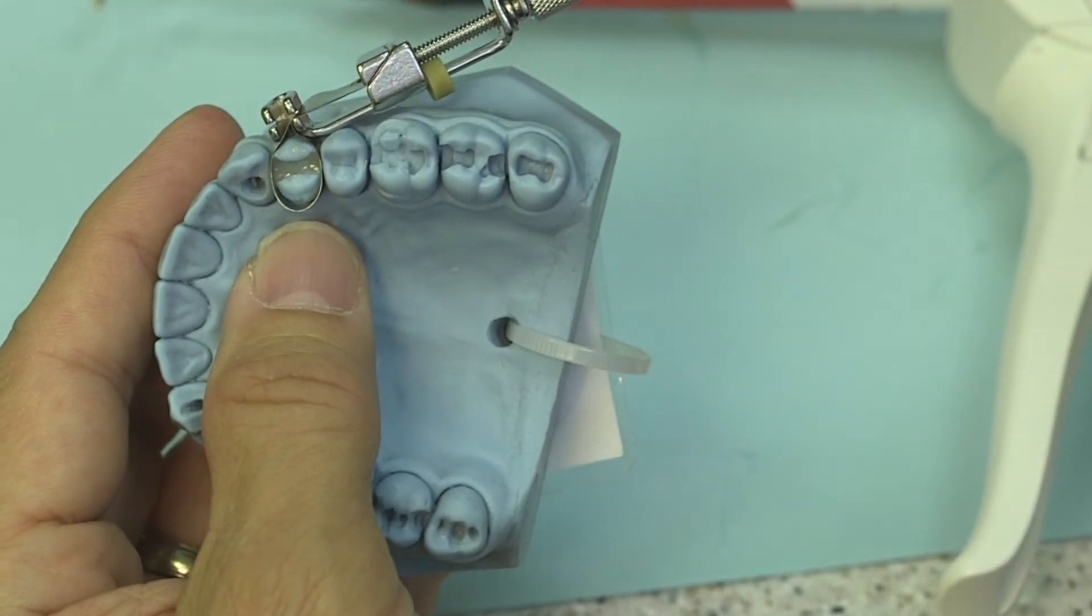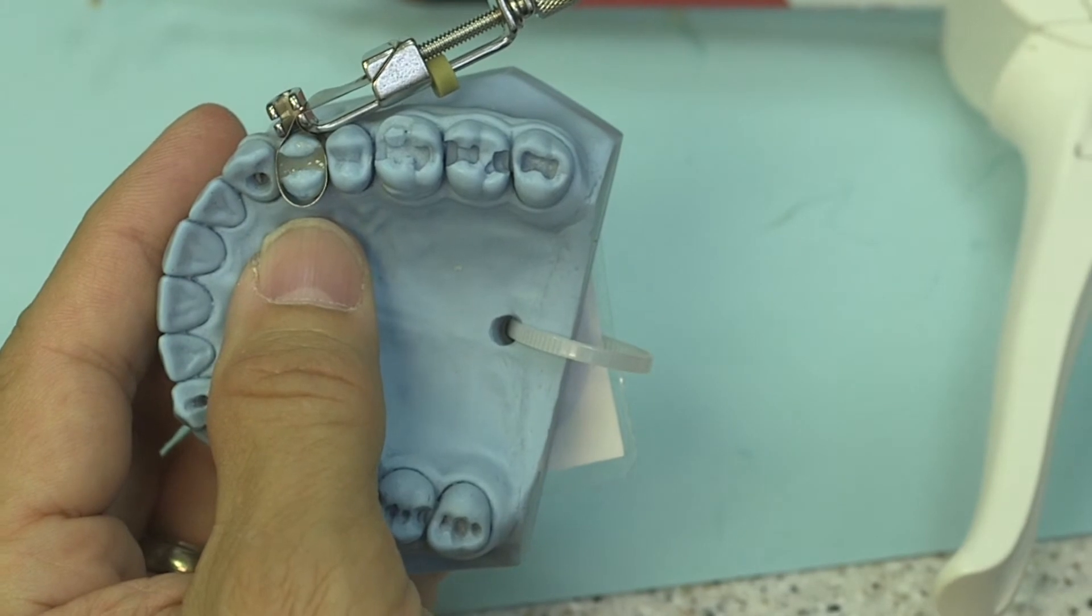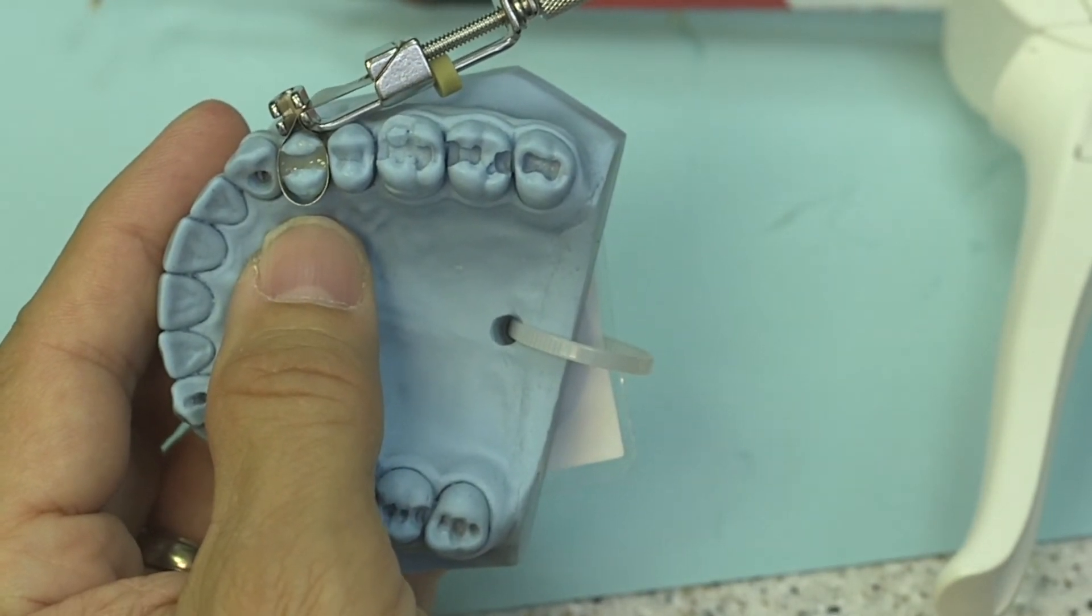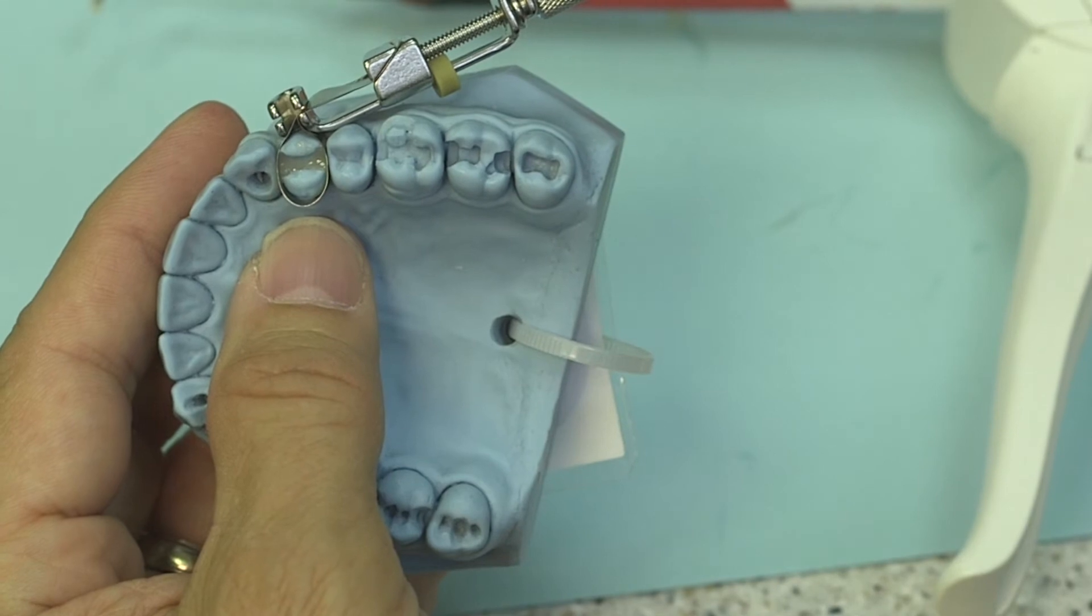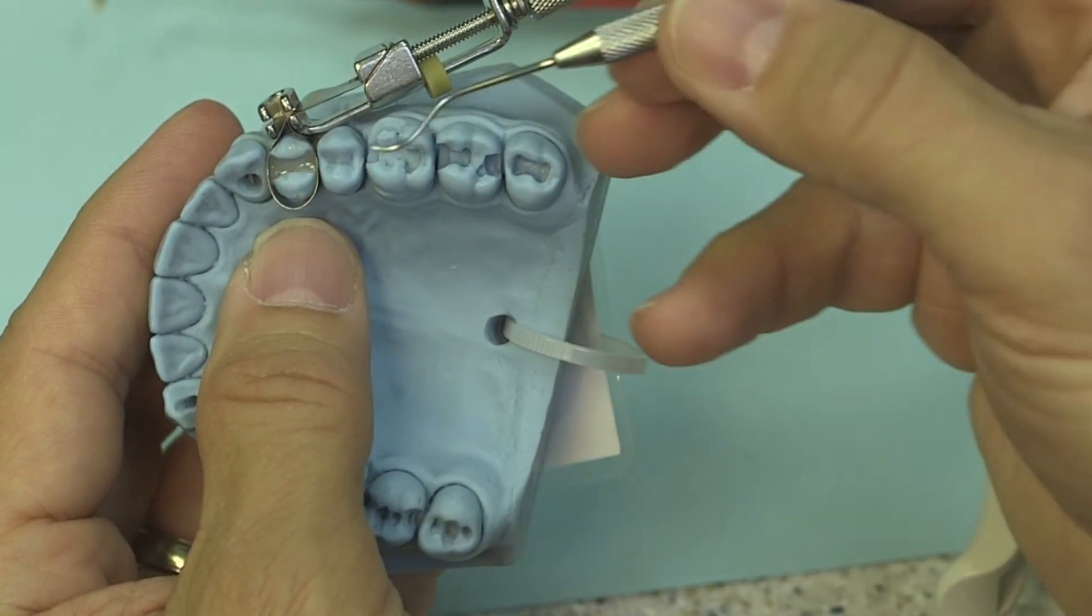As I like to call it sometimes, you're creating a tootsie roll pop: hard on the outside, soft on the inside, and you're not going to really have a full thorough cure. So check your lights, it's going to be very important.